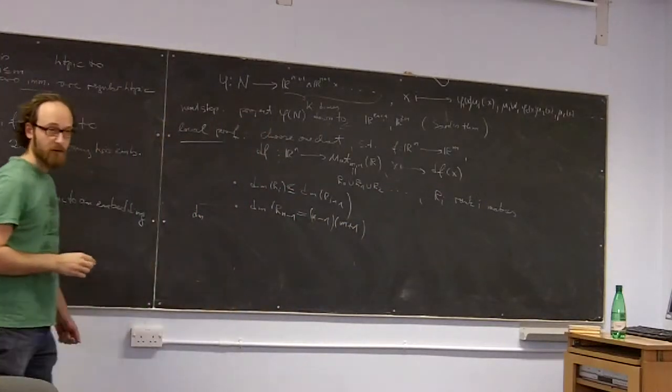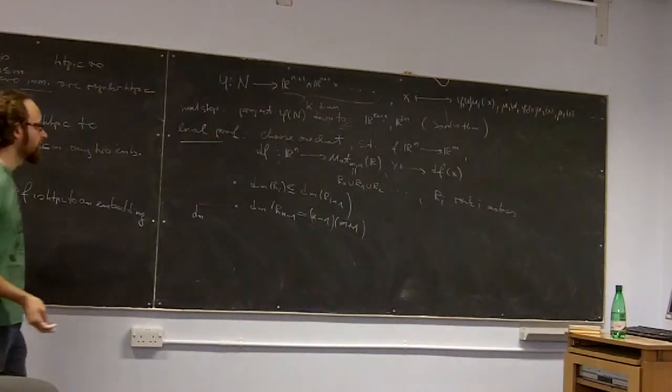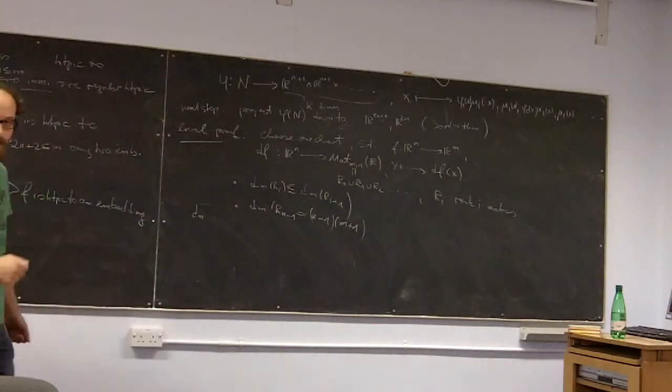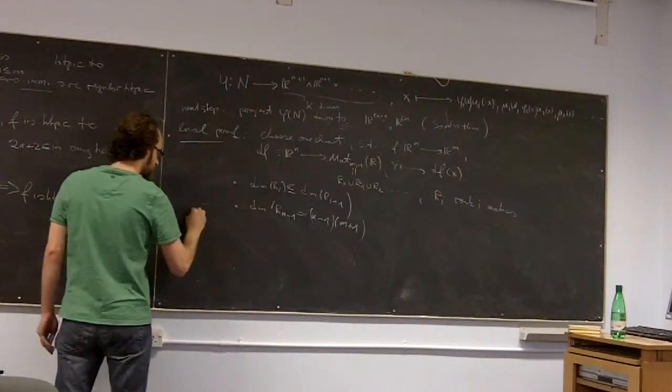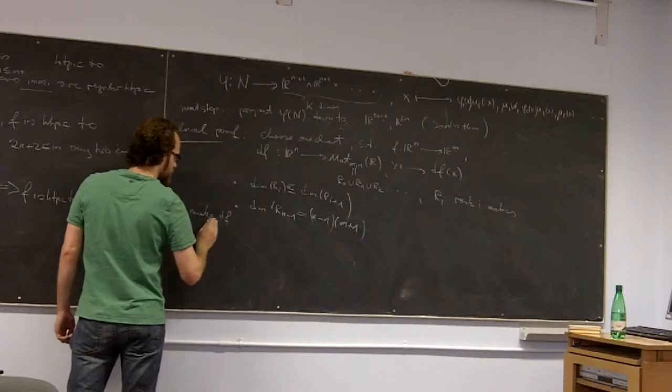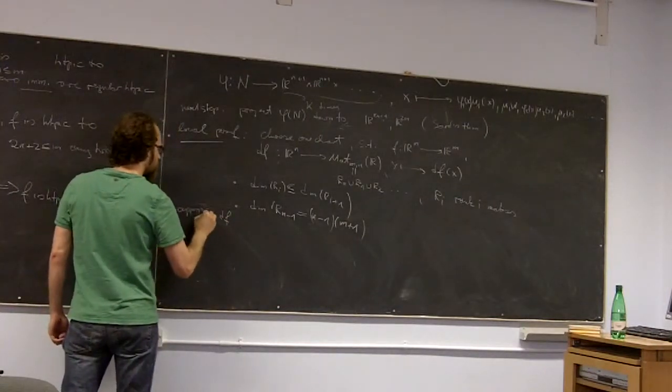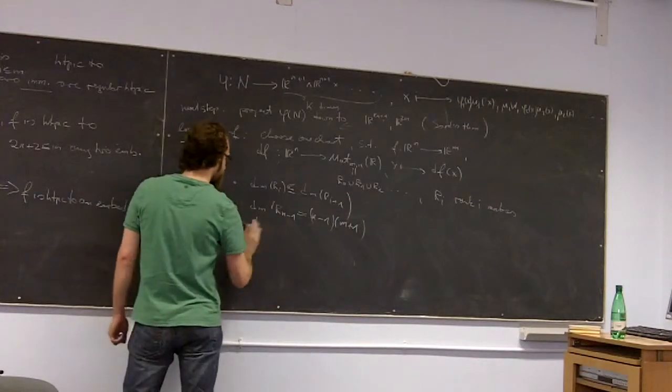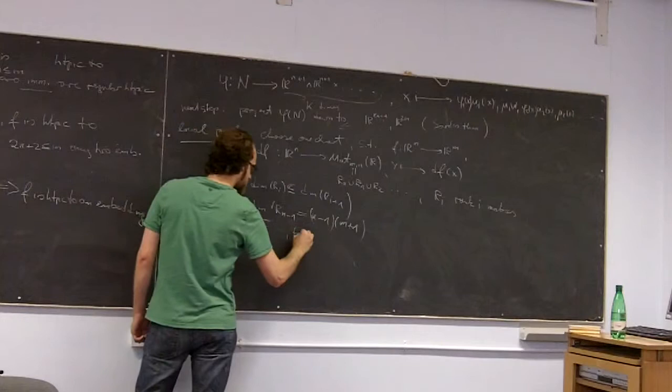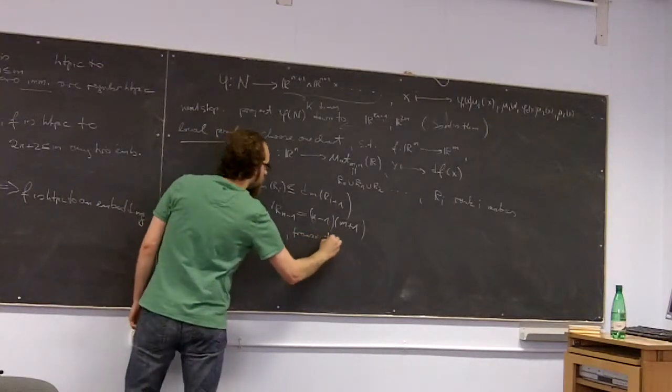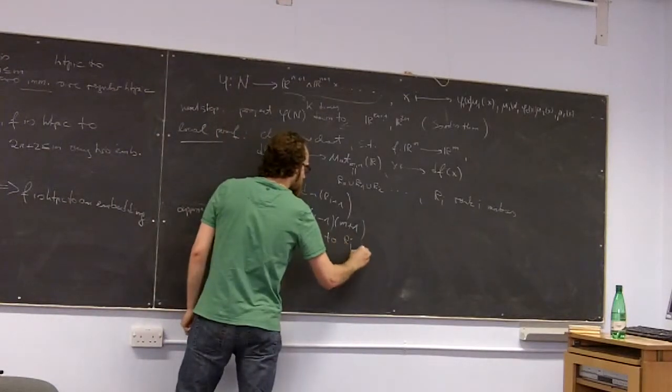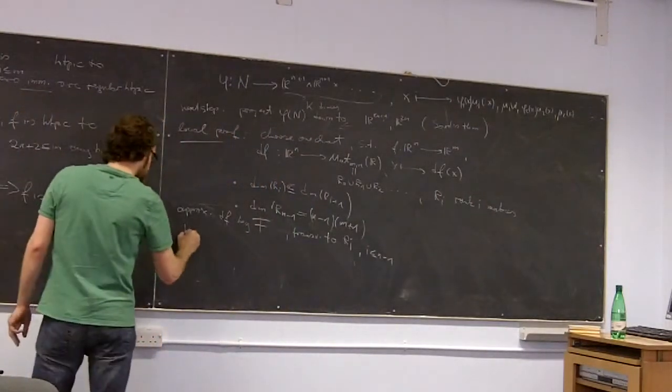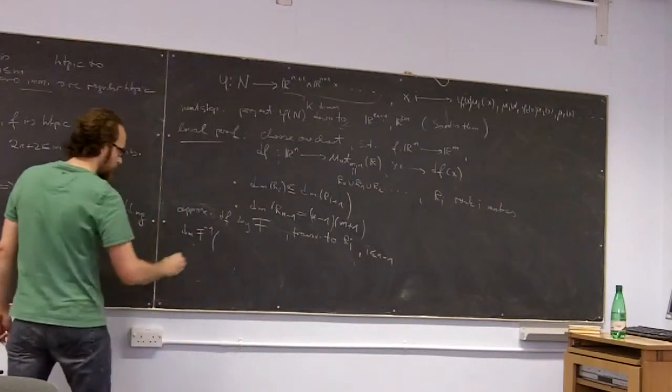So once it is made transverse, we compute the image or the pre-image of the r_i's under this new approximation. So make df, approximate df by a transverse map, by map f which is transverse to R_i where i is less equal n minus one. What is the dimension of the pre-image now of r_i?